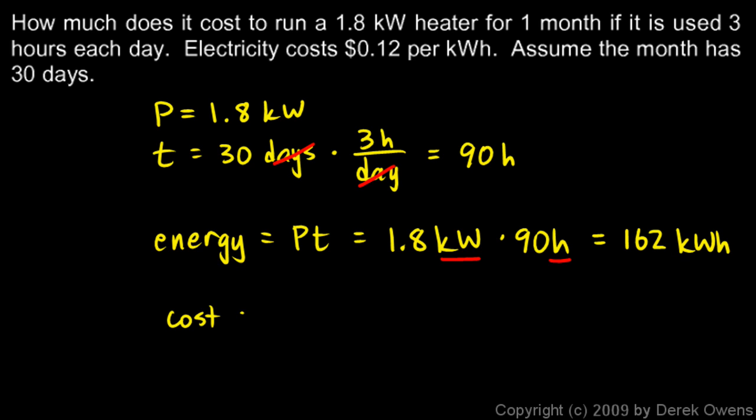And then we can figure out the cost. We have 162 kilowatt hours times 12 cents per kilowatt hour, and I'll write this as .12 dollars per kilowatt hour.